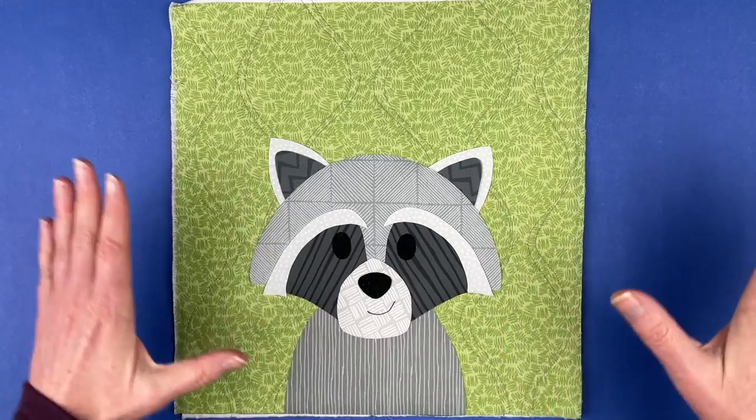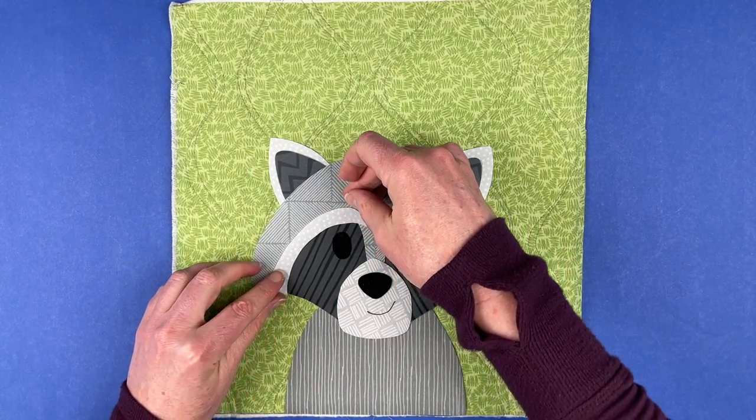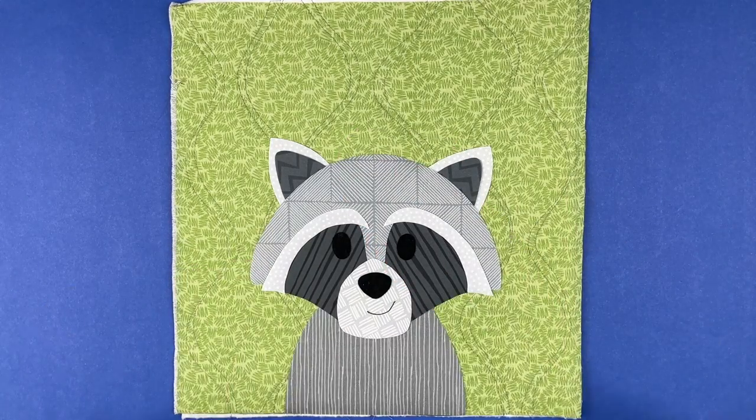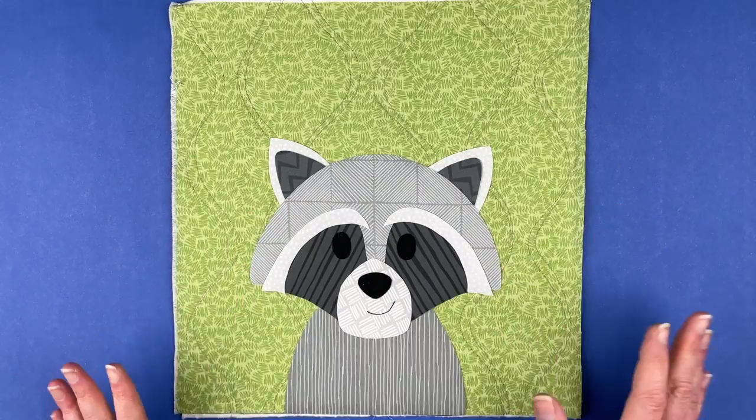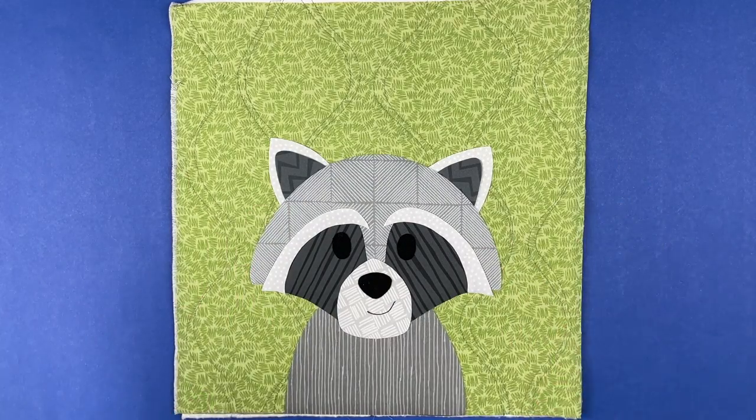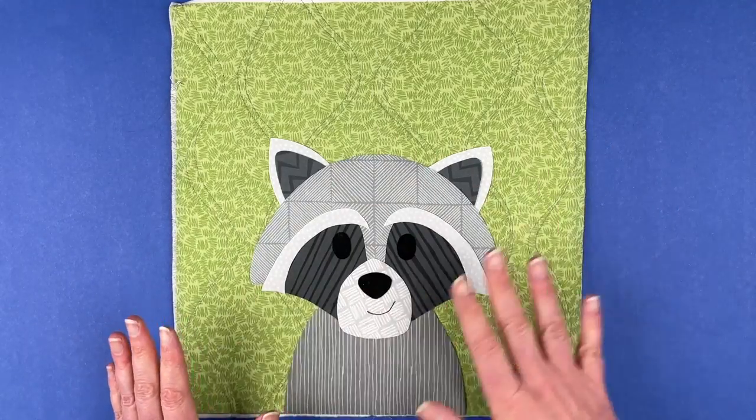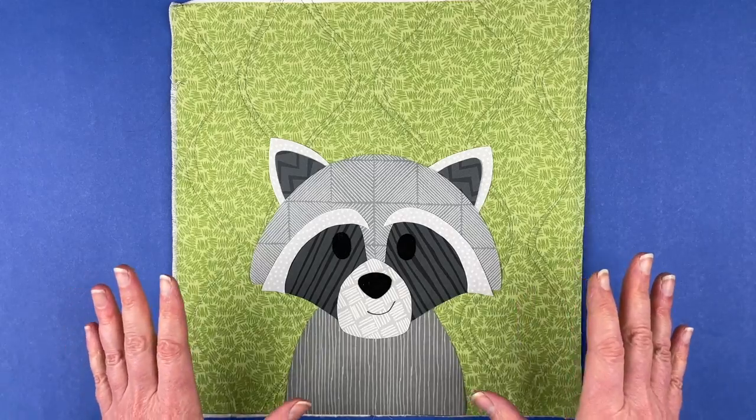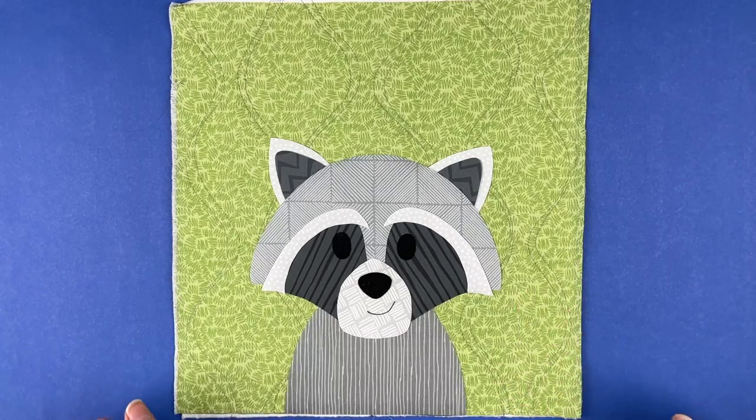All right. I'm going to take all of these pieces. I'm going to take this whole setup over to my ironing board. I'm going to fuse all of the pieces in place. Just follow the instructions on whatever brand of fusible adhesive you're using. I use Heat and Bond Light. And then I'm going to take it to my sewing machine and do all the outline stitching. And then I will bring it back here and show you the finished block. And also show you one other color version I did.